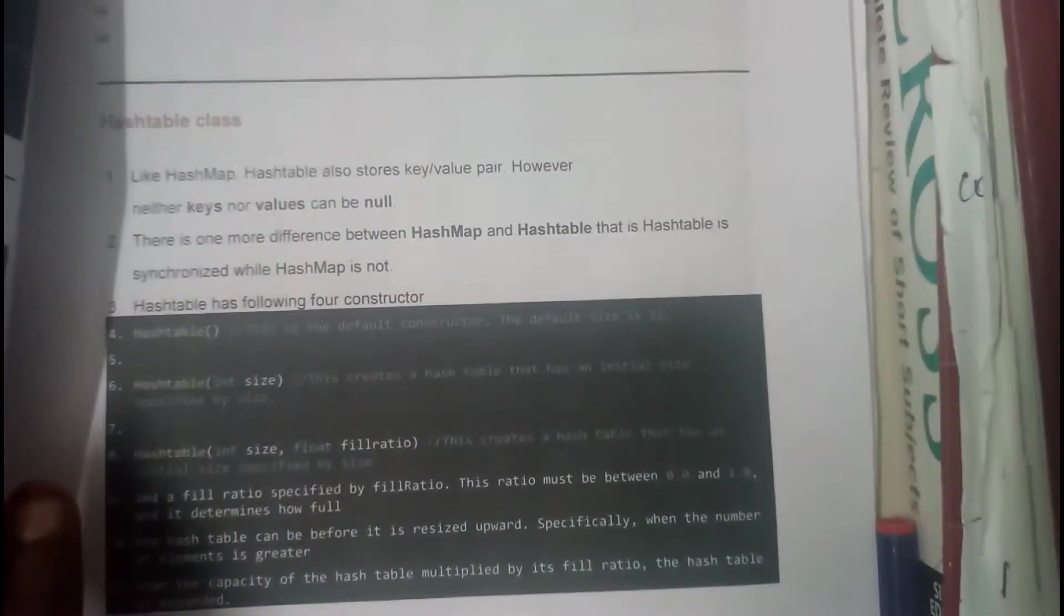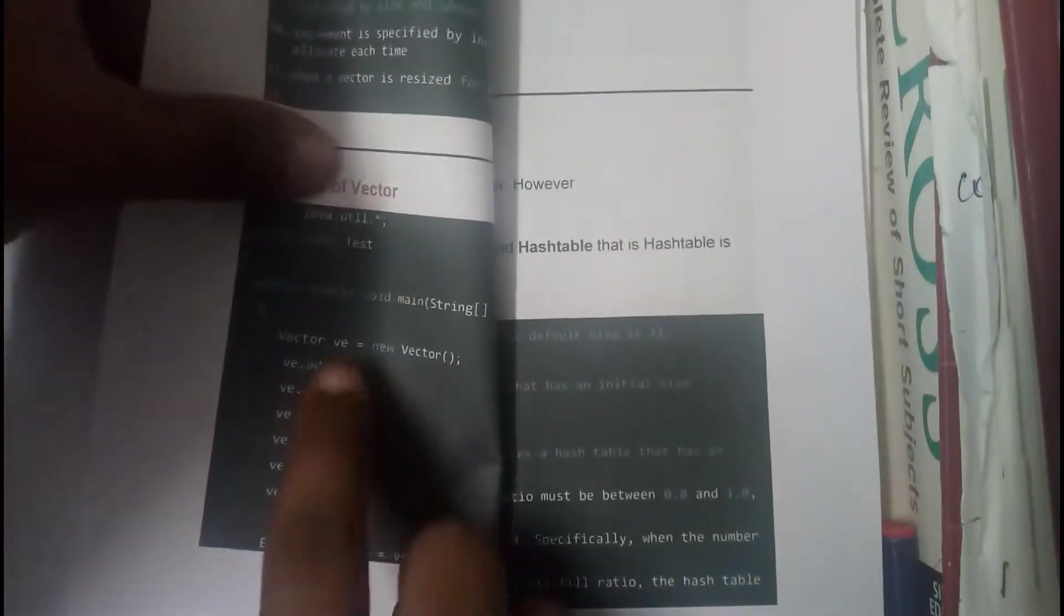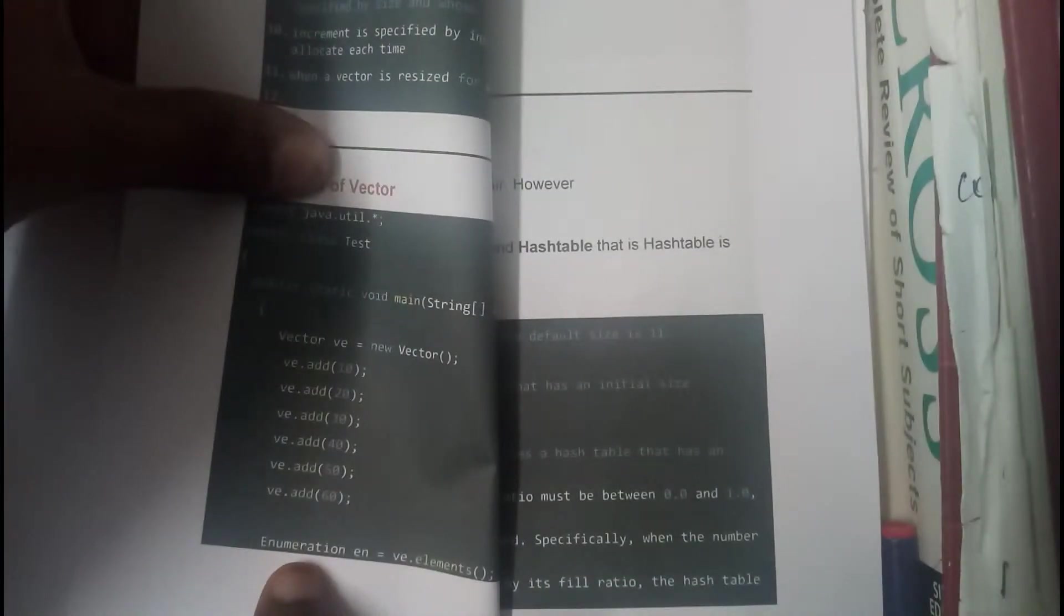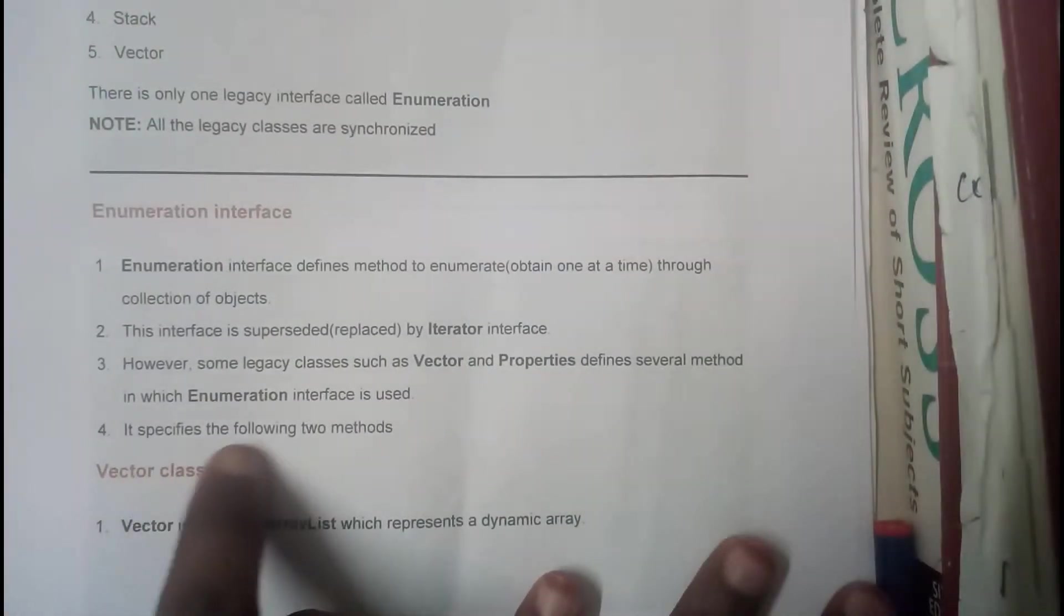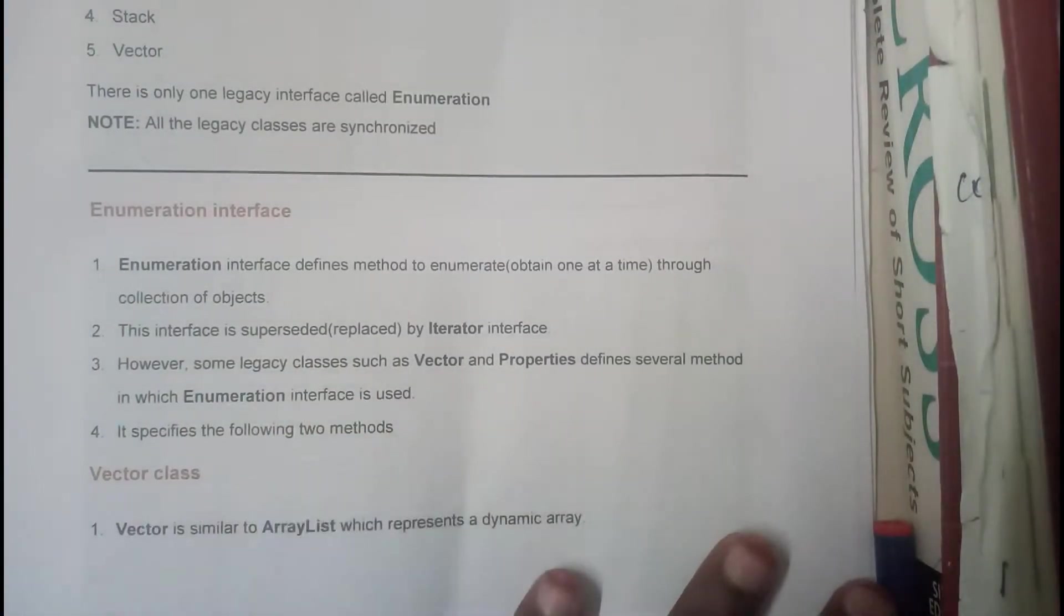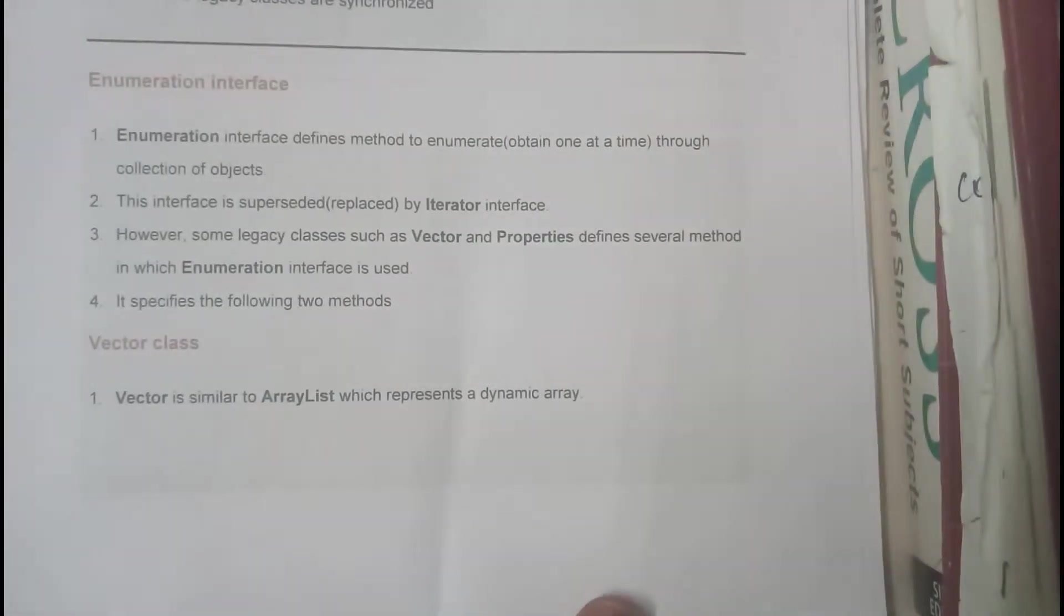Let us go through it once. Yes, this is a vector example and we are using enumerator here. It also specifies many methods. Now let us first go through vectors.